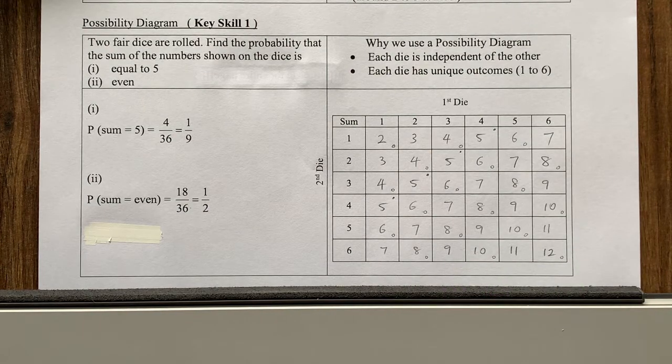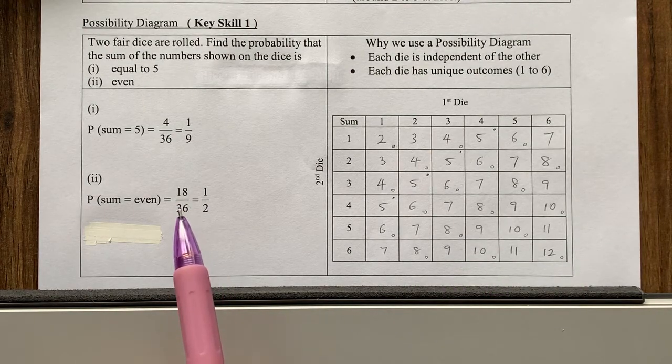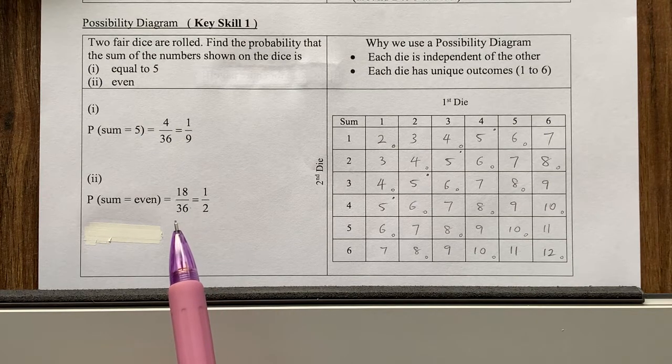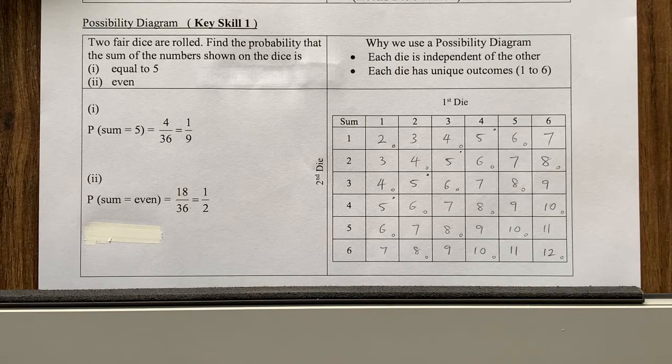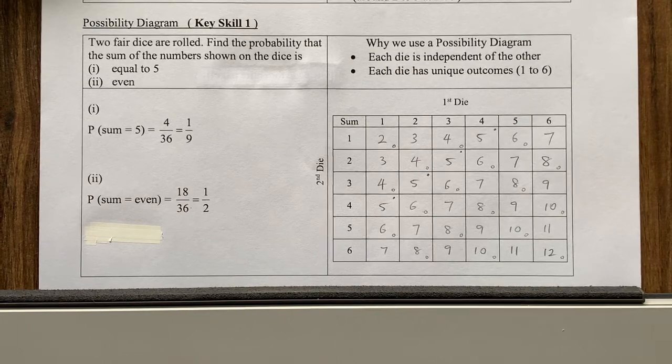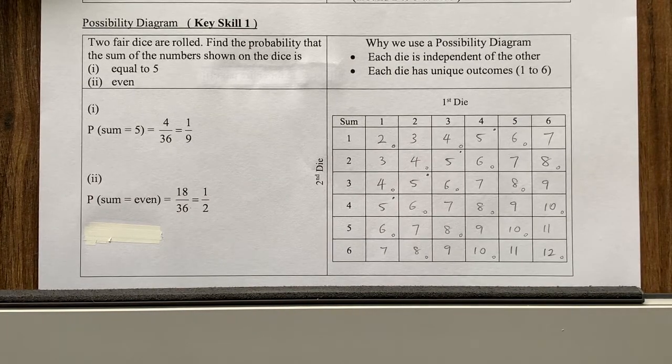So there are eighteen of these dots. That's why the answer is eighteen out of a total possible 36. And of course, you reduce to half. So that's what the possibility diagram does for you. It lists out all the possible cases. Then from there, you can count all the probability very easily.